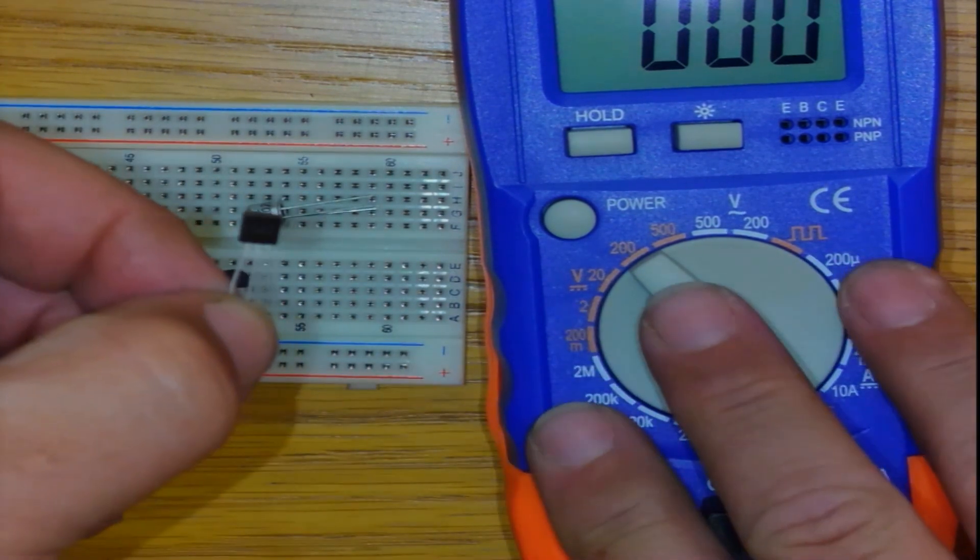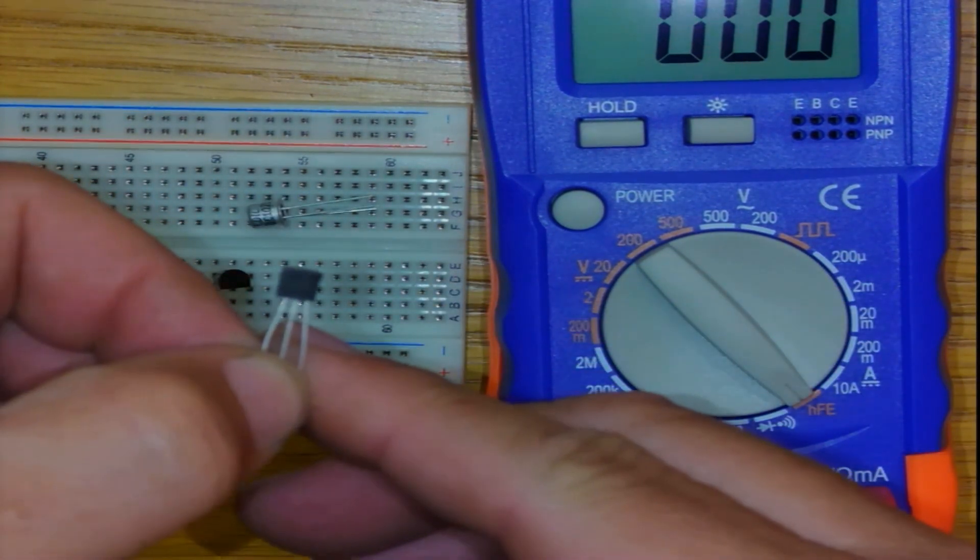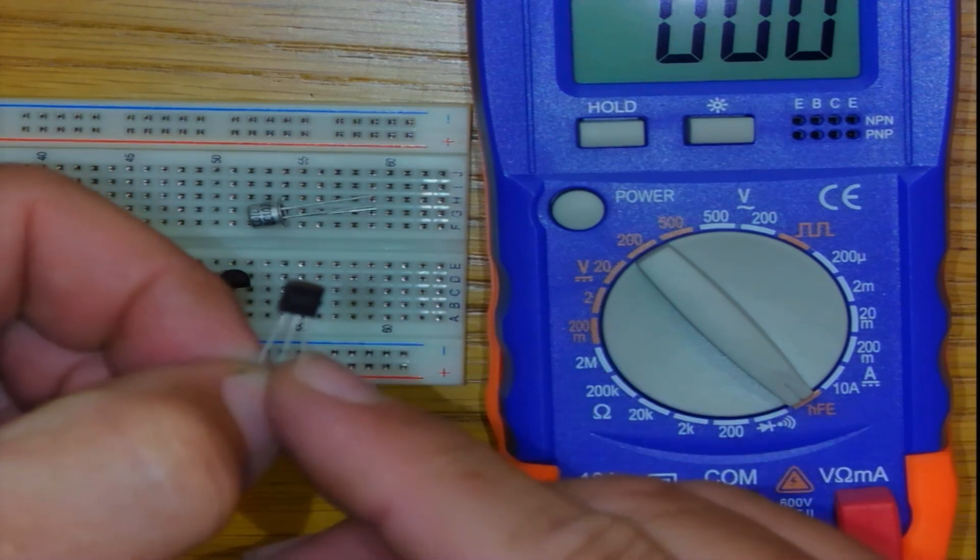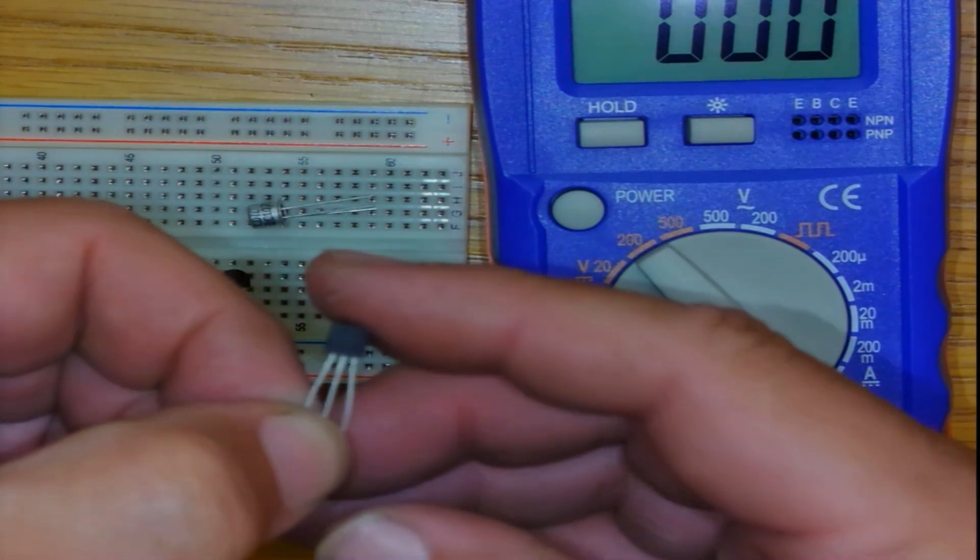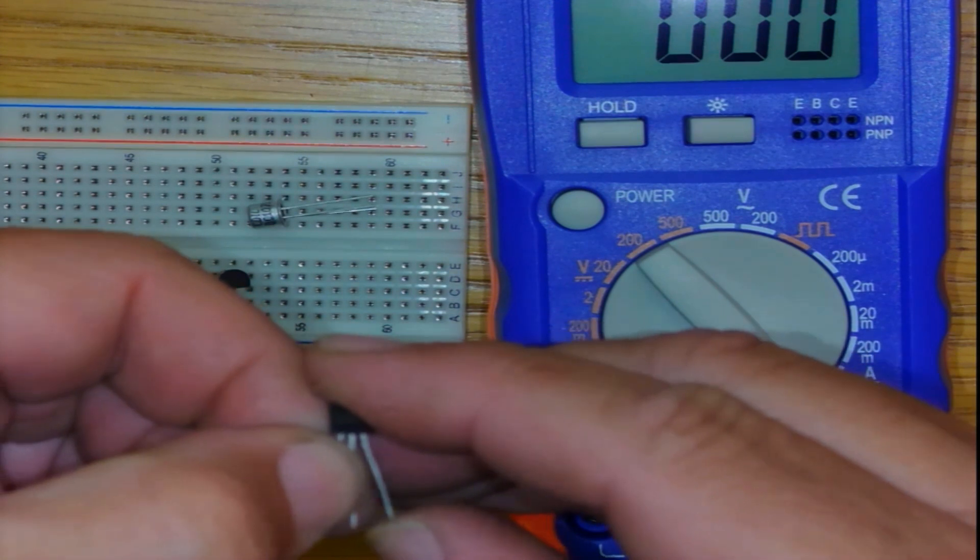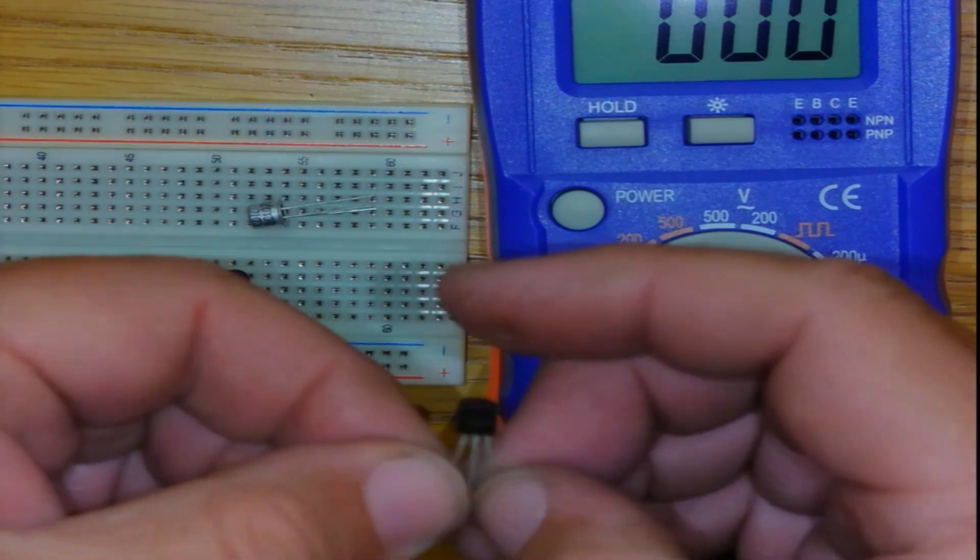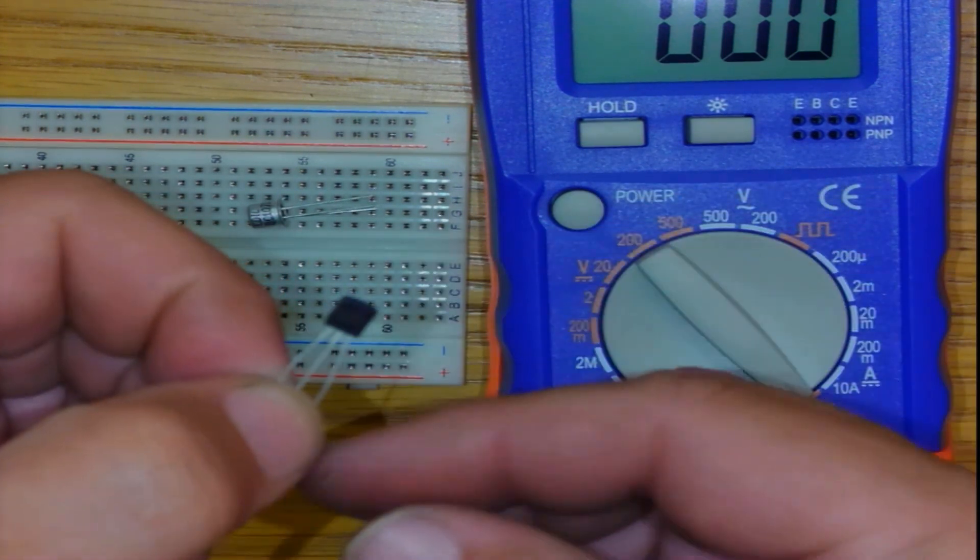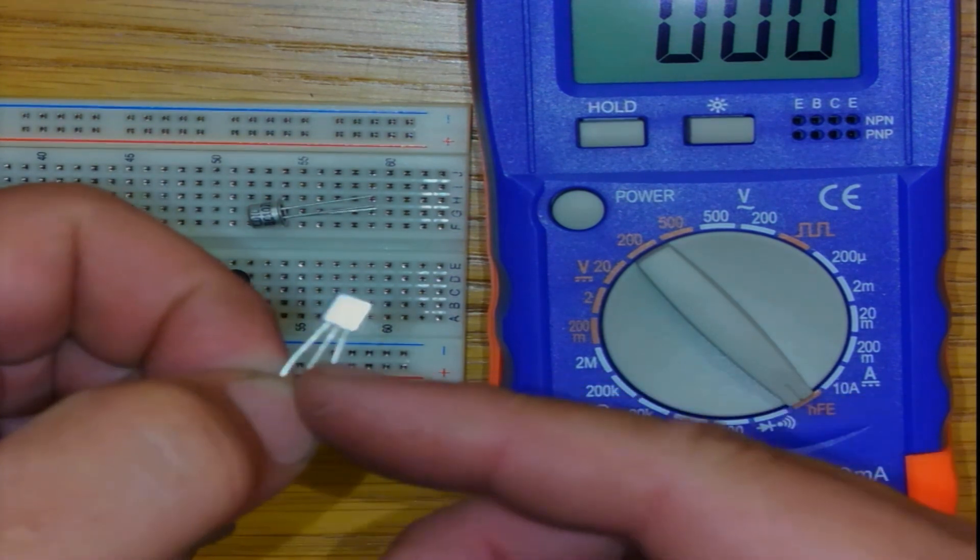We're using a multimeter to identify a transistor and the transistor legs, the fastest method. There are different methods in a textbook and you are encouraged to measure and to play with your components.